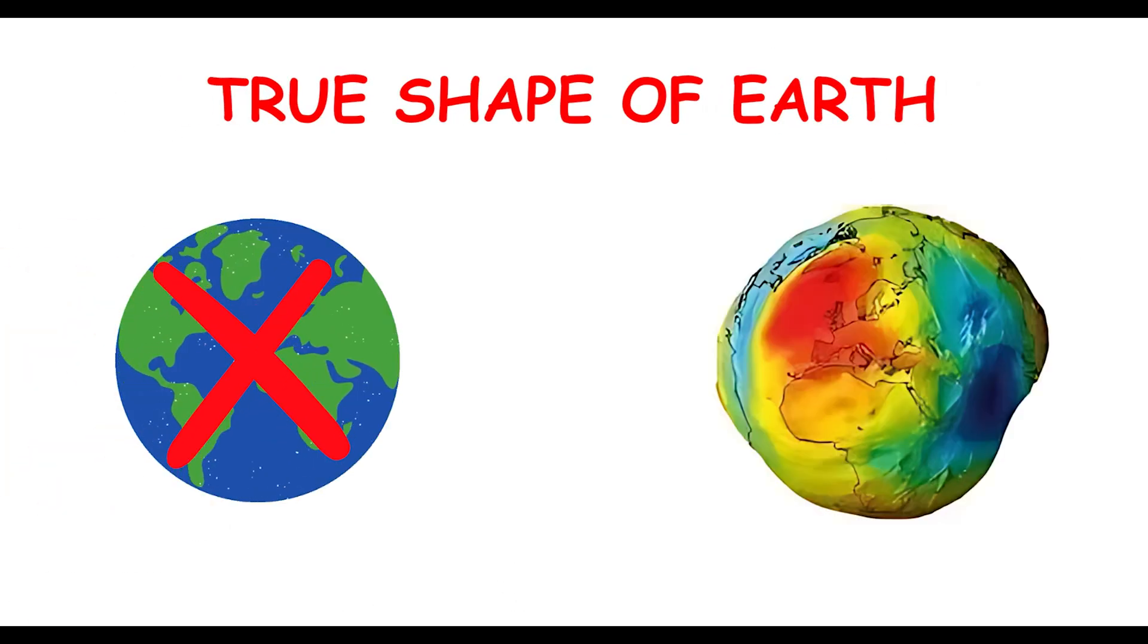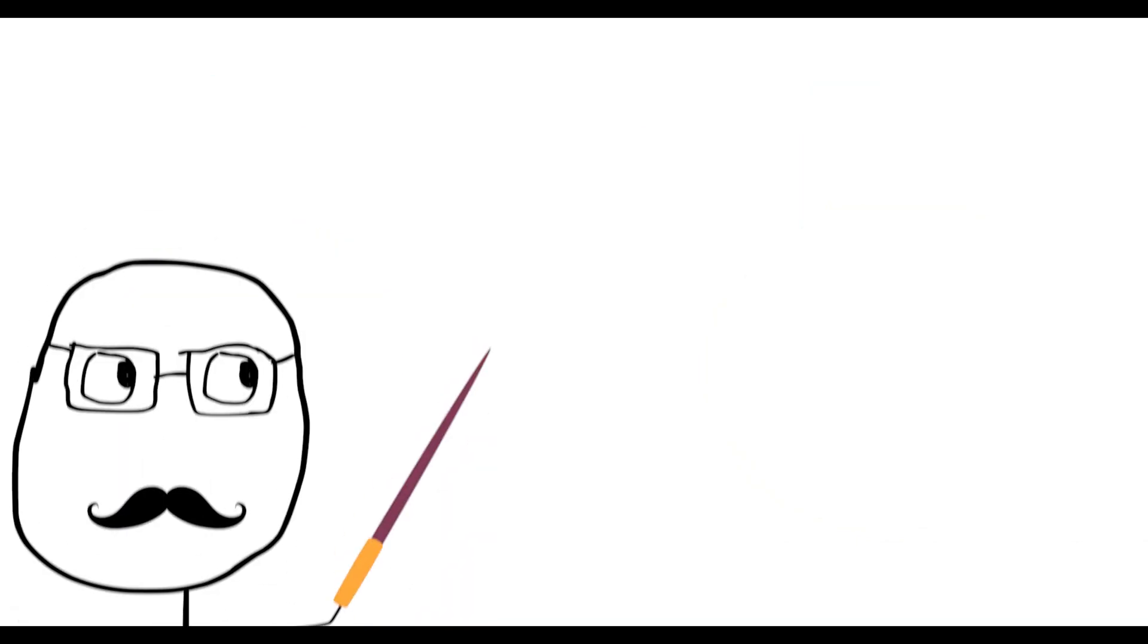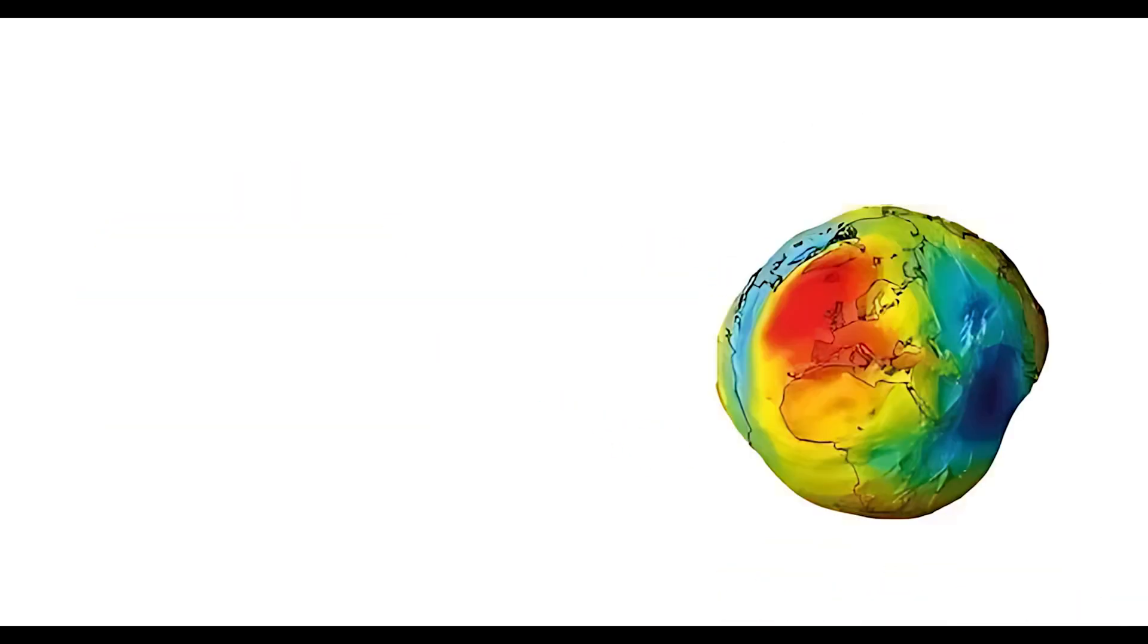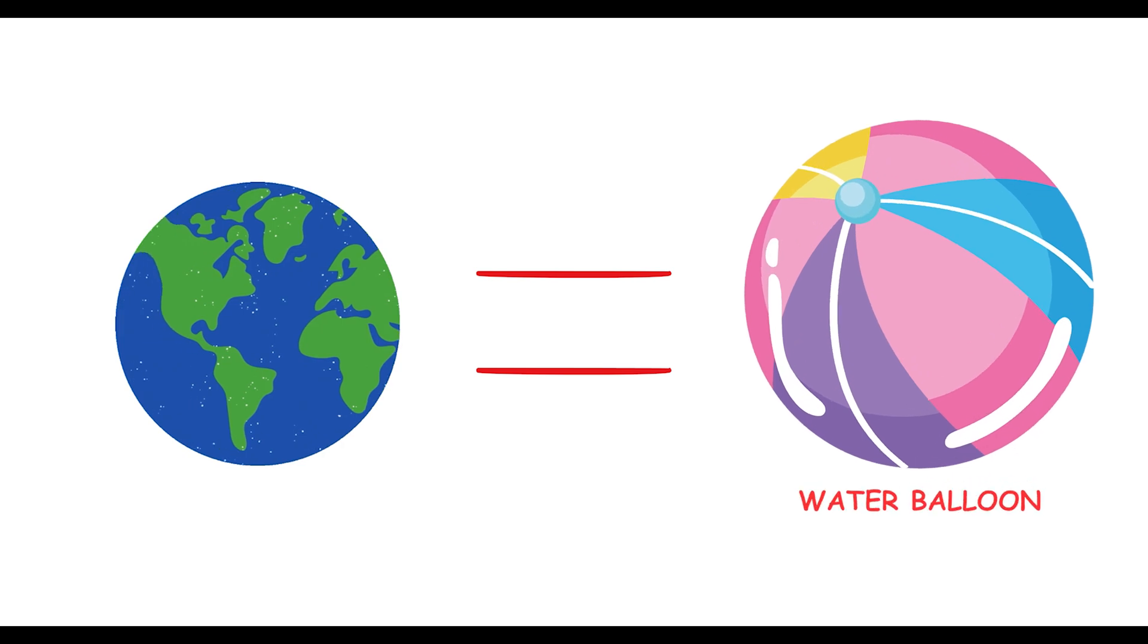The Earth is perfectly round. Did you know Earth isn't a perfect sphere? It's actually a bit chubby around the middle. The Earth is an oblate spheroid, meaning it's slightly flattened at the poles and bulging at the equator. This shape is due to Earth's rotation. Think of it like spinning a water balloon. It bulges in the middle, just like our planet.